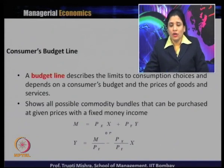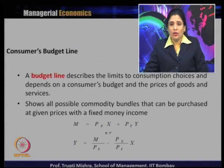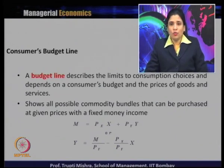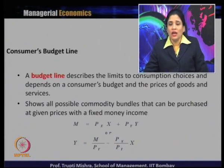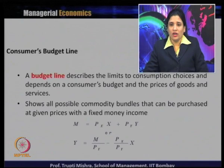If M is the money income and the total consumption basket consists of two goods X and Y, then the budget line is represented as M = PxX + PyY. We are assuming the entire money income is spent only on goods X and Y. Px is the price of X, Py is the price of Y, X is the quantity of X, and Y is the quantity of Y.